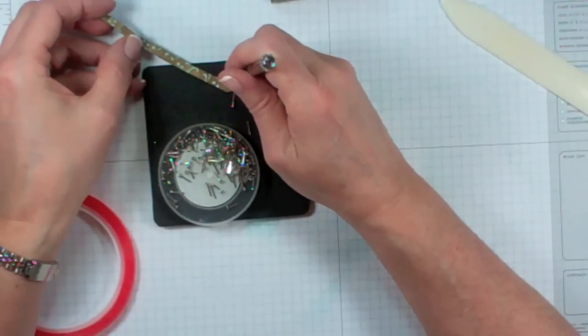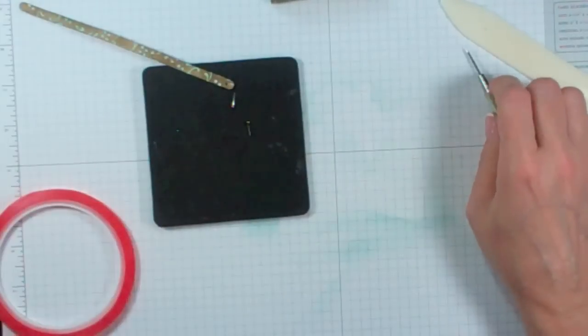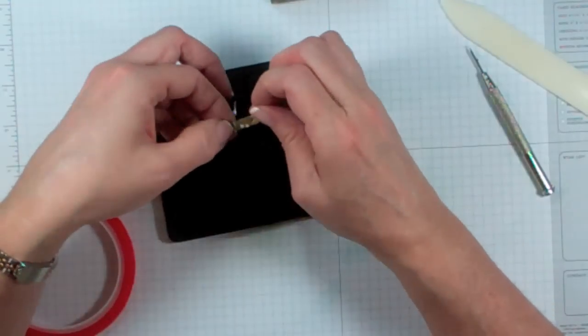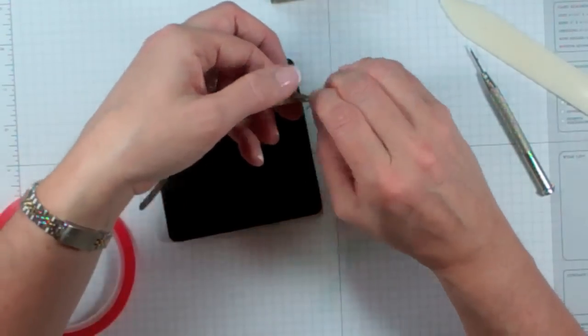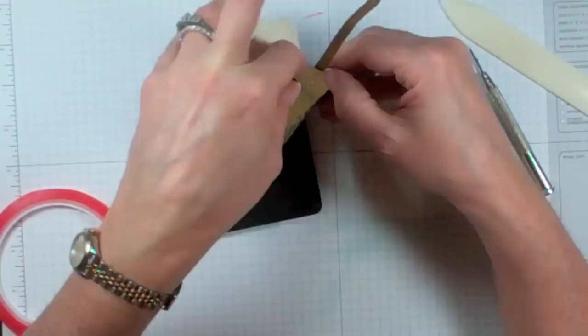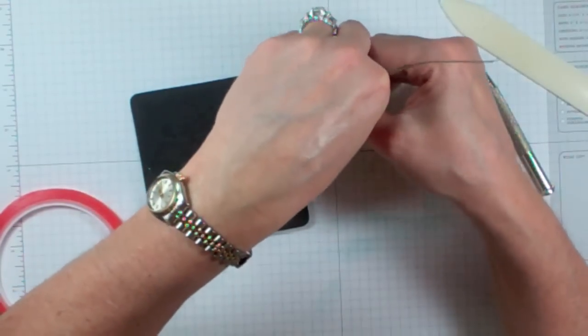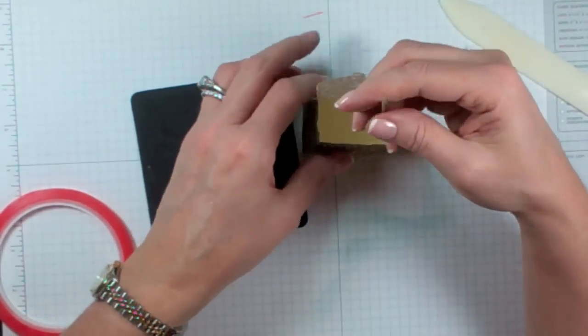And I'm going to take two of our mini brads. I'm just going to put those right through. I'm going to stick that in here. Then I'll open that brad up and it's going to hold the handle in place. And then I'm going to do exactly the same thing on the other side.